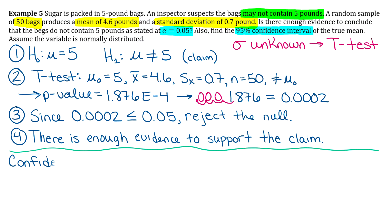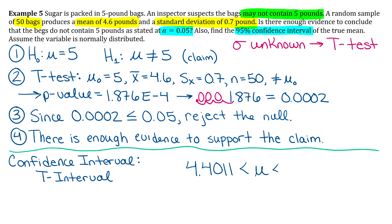Now we find the 95% confidence interval of the true mean. The same reasons we used a T-test are why we use a T-interval — that was back in chapter seven. Go to T-interval in your calculator, put in the same information, and set the confidence level to 0.95. You should get a confidence interval of 4.4011 to 4.7989, so we think mu is between those two values.